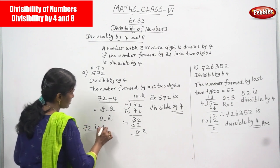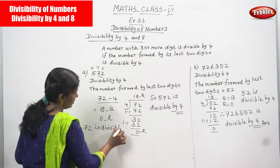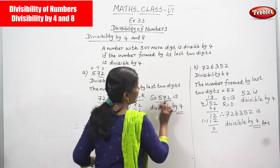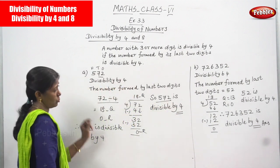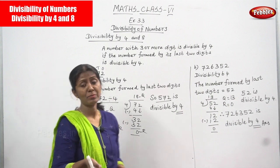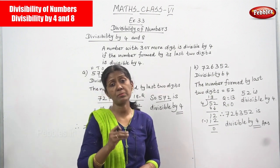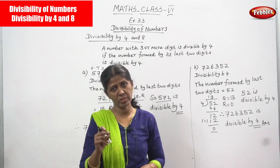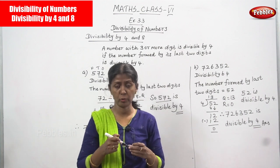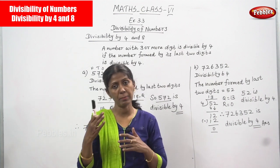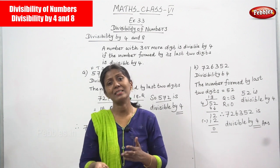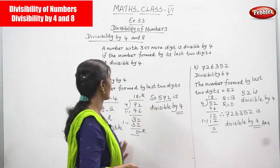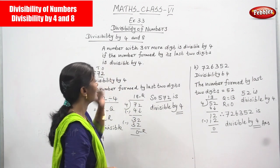Since the remainder is zero, 72 is divisible by 4. Therefore, 572 is divisible by 4 — because the rule says: take the last two digits of the three-digit number 572, which is 72; since 72 is divisible by 4, the entire number 572 is also divisible by 4.